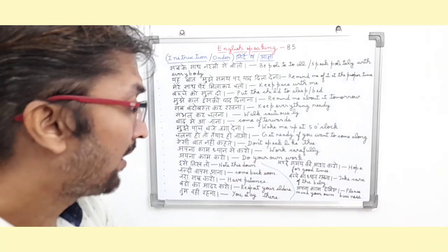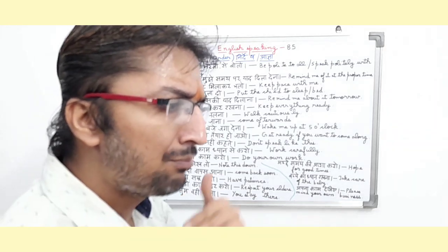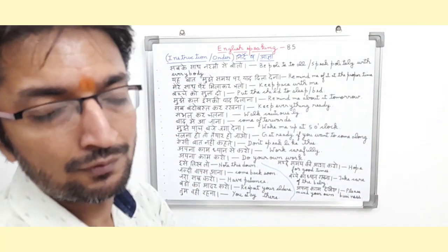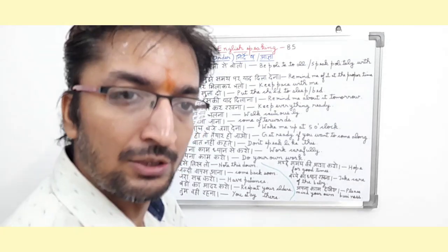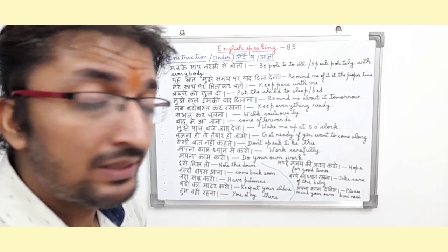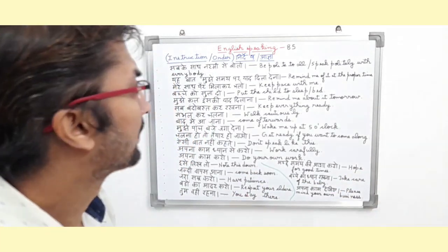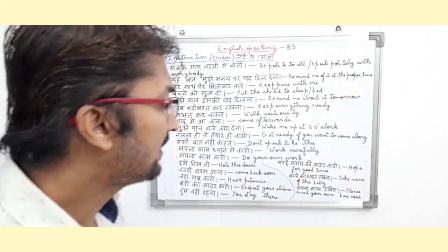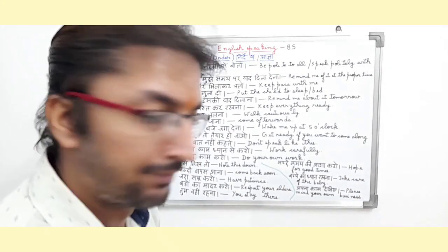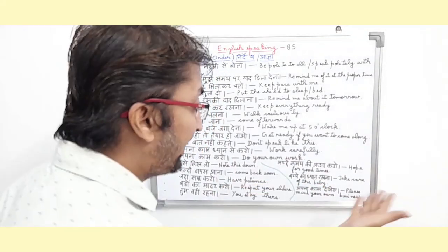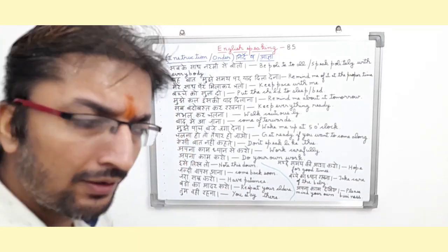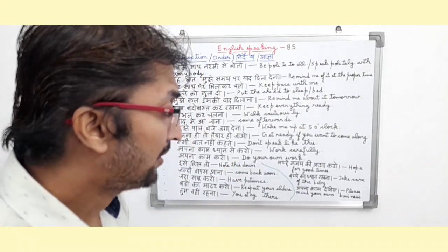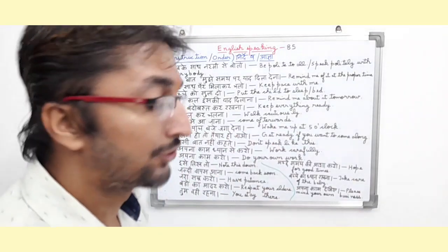In English it means 'hope for good times.' It is also an order type sentence and a positive and optimistic type sentence — that we should be positive in our life. Also, 'take care of the baby' — it is an order and instruction type sentence because the person is saying to take care of the baby.